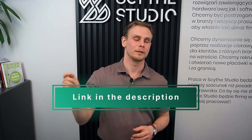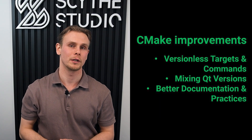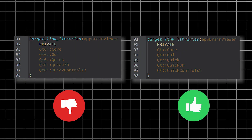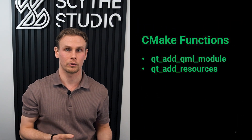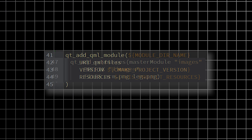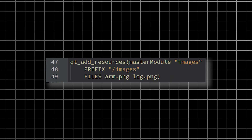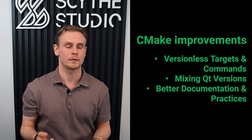Of course, if you want to see the full list of changes, you can check out the link in the description below. CMake API has also evolved in Qt 6, bringing some new improvements. No more Qt5Core or Qt6Core — just use QtCore, making your CMake code cleaner. Qt 6 also adds new CMake functions like qt_add_qml_module, which simplifies QML module integration and reduces unnecessary code and setup. qt_add_resources automates resource handling, reducing manual work and errors.